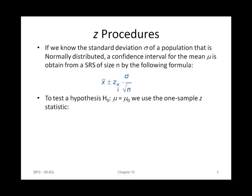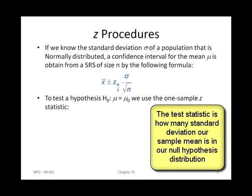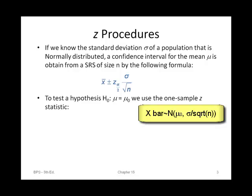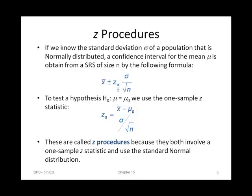If we want to test a hypothesis, our null hypothesis would be mu equal to a certain value denoted by mu-naught, and we use a one-sample Z statistic. This test statistic measures how many standard deviations our sample mean is in the null hypothesis distribution. The null hypothesis distribution has mean mu-naught and standard error sigma divided by the square root of n, where n is the size of our simple random sample. These are called Z procedures because both involve a one-sample Z statistic and use the standard normal distribution, which is Table A in our book.